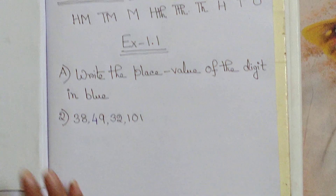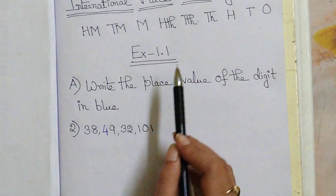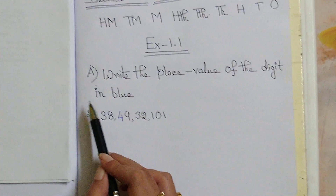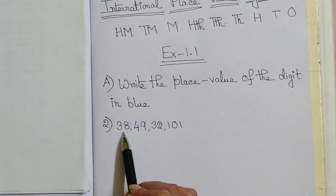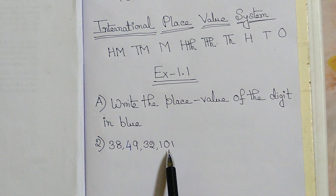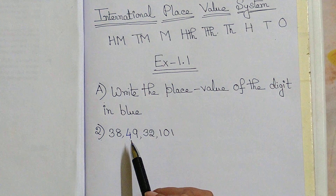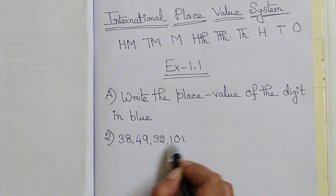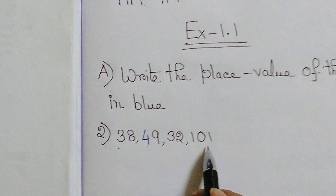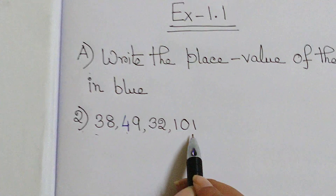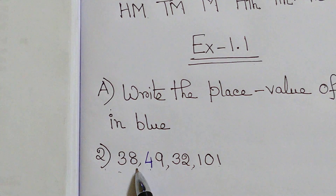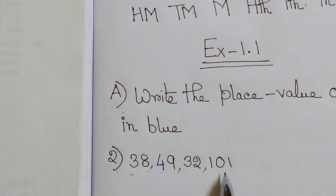Let's start with the sum. Your first exercise is exercise 1.1. The very first question, sum number A: write the place value of the digit in blue. We are going to solve sum number 2. The numeral form given is 38,49,32,101. I need to tell the place value of this 4. This numeral is given in the Indian place value system — after 3 digits one comma is given, after 2 digits one comma, again 2 digits one comma.